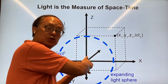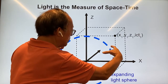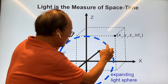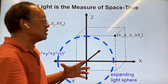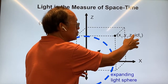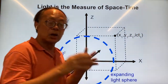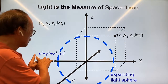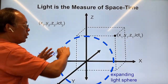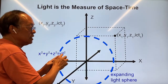For example, if this is a supernova it is expanding, and the light comes out as an expanding light sphere. The position on this expanding light sphere is given by x² + y² + z² = c²t². So you have a formula describing the frontier of the light sphere.